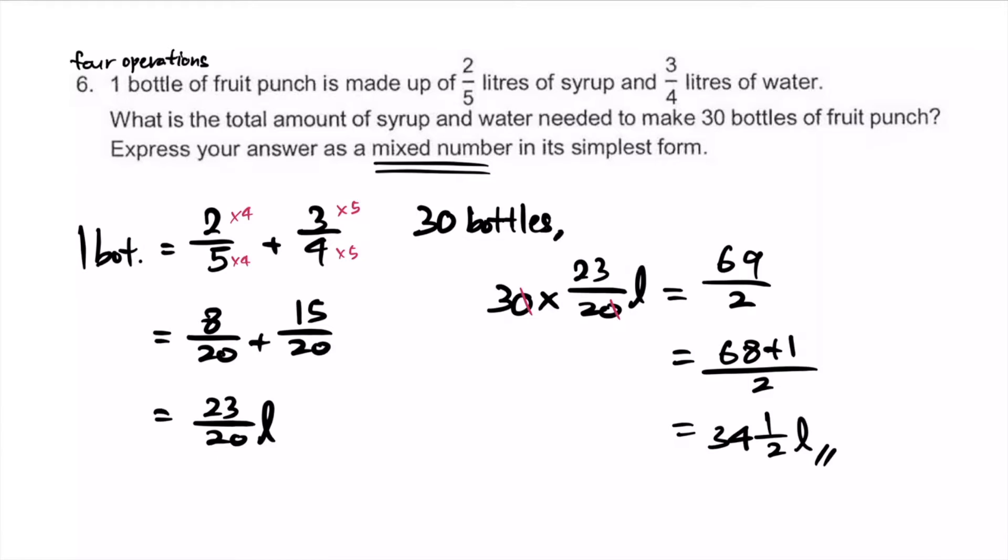This is the number of liters per bottle. We want 30 of that, so we take 30 multiplied by this. If you look, we can cancel the zeros, making us take 3 times 23, that's 69, and our denominator is 2. Make sure your final answer is a mixed number: 34 1/2 liters.